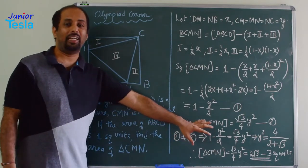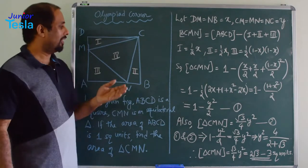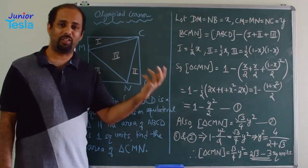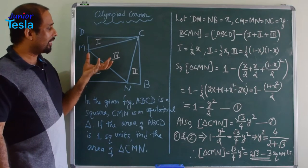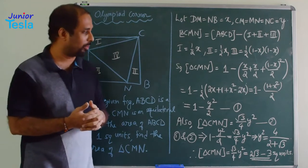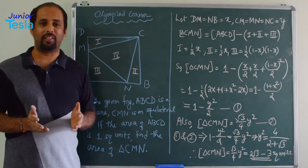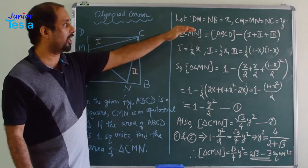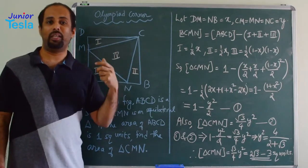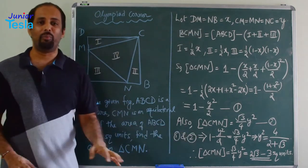A little bit of algebra comes at the end of the solution; otherwise everything is a very direct solution. We had two unknowns X and Y, but they should not appear in the final answer. We eliminated both X and Y and finally got the numerical value 2√3 − 3.